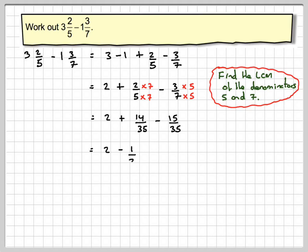So we have 2. 14 minus 15 gives us negative 1 over 35.